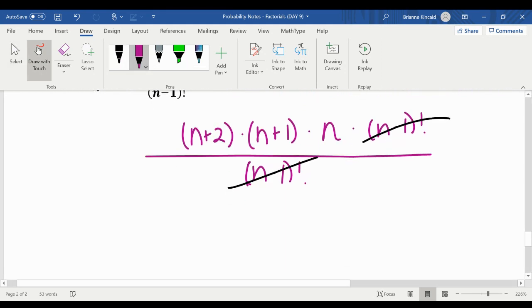The final answer that you are left with is n plus 2 times n plus 1 times n.